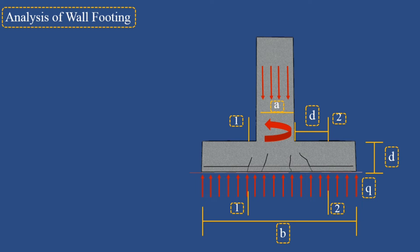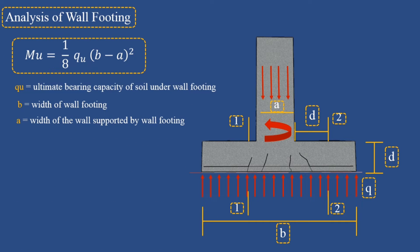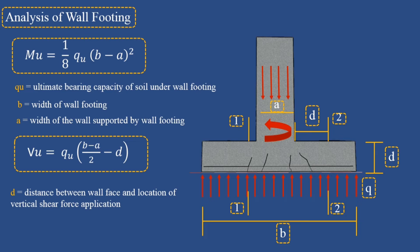The maximum bending moment Mu in footings under concrete walls is computed using the relevant equation, where the ultimate bearing capacity of soil under the wall footing equals the ultimate distributed load divided by the required area of the footing. B is the width of the wall footing and A is the width of the wall supported by the footing. The vertical shear force Vu is calculated on a section located at distance d from the face of the wall.